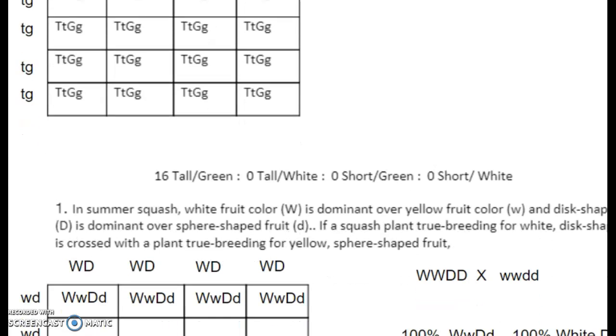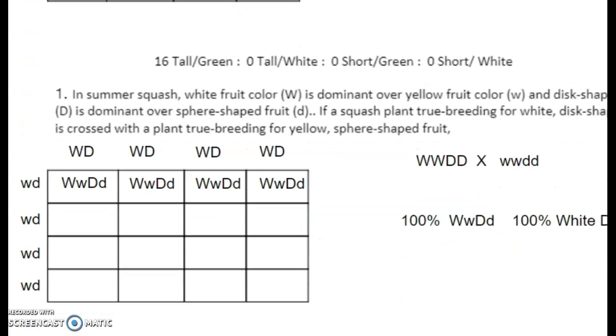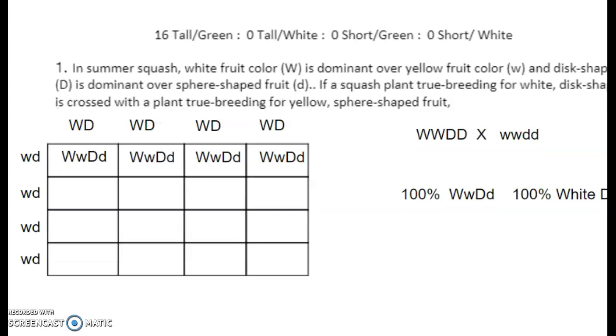Genotypically they would all be tall and green, so 16 tall and greens, zero tall whites, zero short greens, zero short whites.